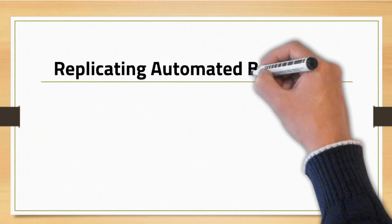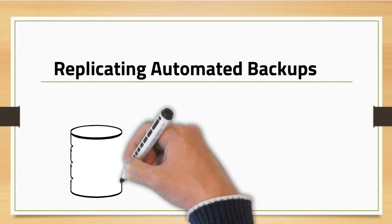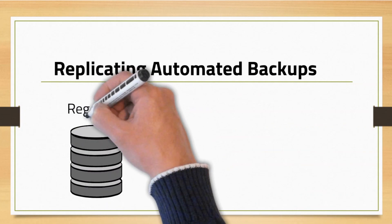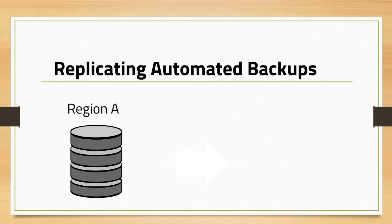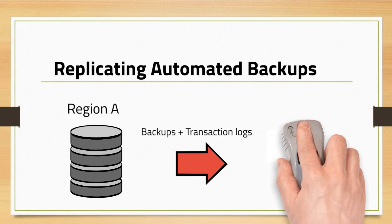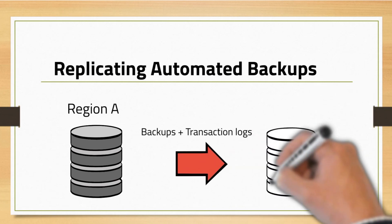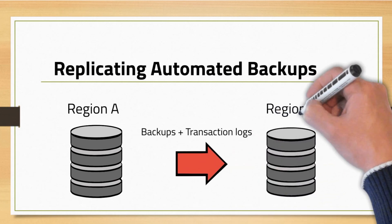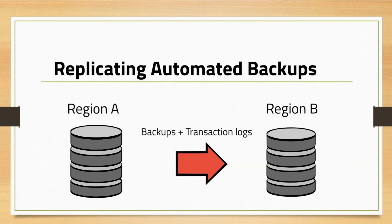For added disaster recovery capabilities, you can configure your Amazon RDS database instance to replicate snapshots and transaction logs to a destination AWS region of your choice. When backup replication is configured, RDS initiates a cross-region copy of all snapshots and transaction logs as soon as they are ready on the database instance. However, keep in mind that this will be at an additional cost.